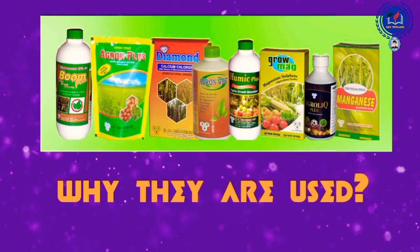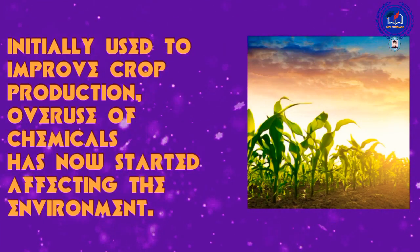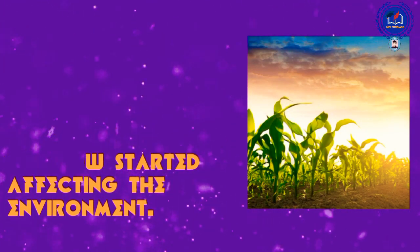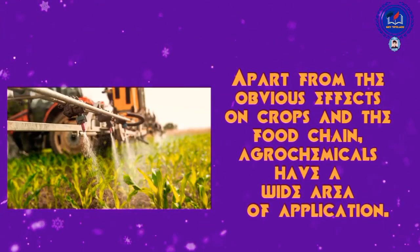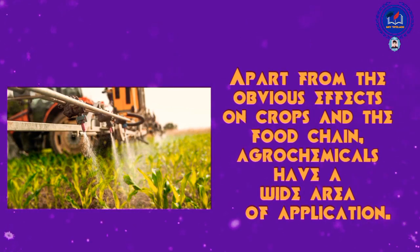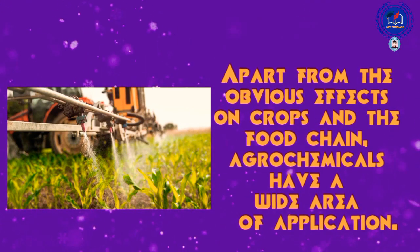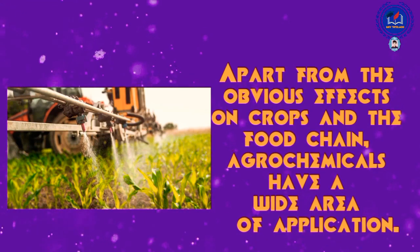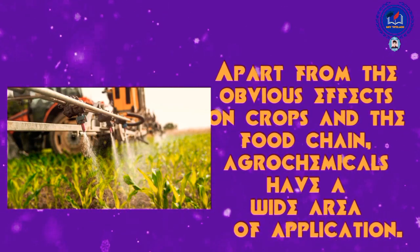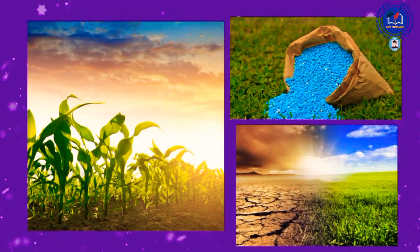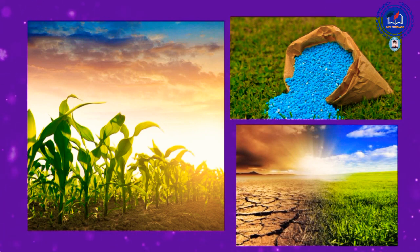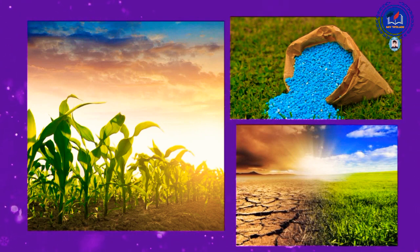Although initially used to improve crop production, overuse of chemicals has now started affecting the environment. Apart from the obvious effects on crops and the food chain, agrochemicals have a wide area of application. Due to these many uses, they seep into the surrounding land and water bodies, therefore having a widespread effect.